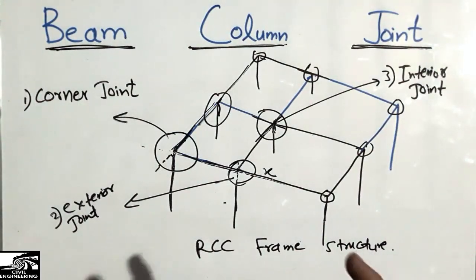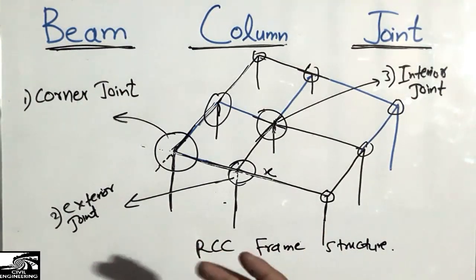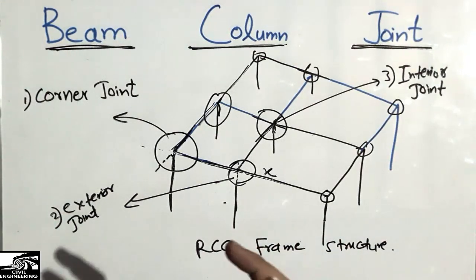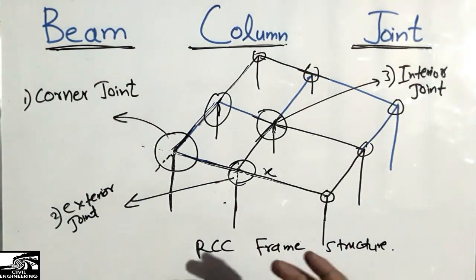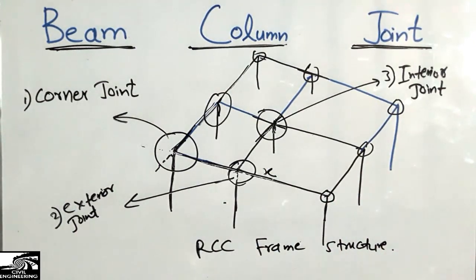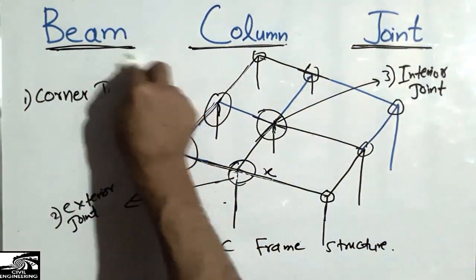Each joint should be designed so that it can resist seismic forces as well as gravity loads, because joints are not usually designed for concentric loads — they are usually designed for eccentric loading as well. Now let's go into some key design points.